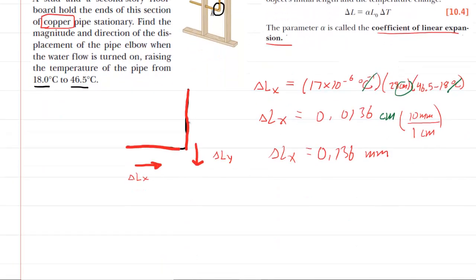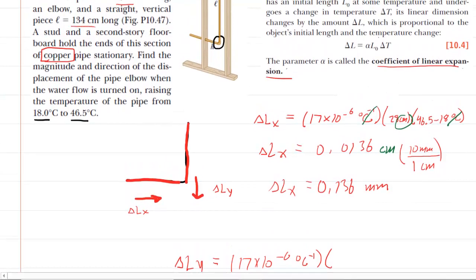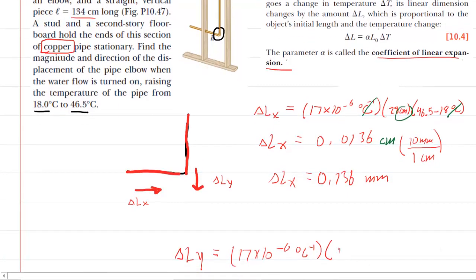But the elbow is also going to expand downward. So we're going to calculate delta Ly using the same idea. So we'll take the coefficient of linear expansion. It still is copper, of course. So we'll use the same value. The vertical section of the elbow had a different length. It was 134 centimeters. So make sure you use that for your original length. And then you're going to multiply by the same temperature change, the 46.5 degrees. Minus the 18 degrees Celsius.